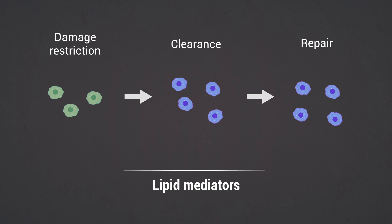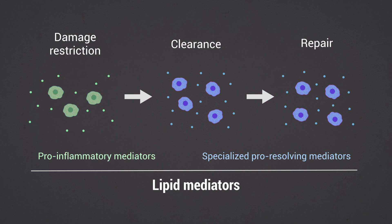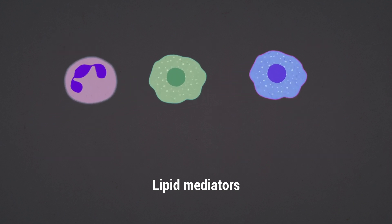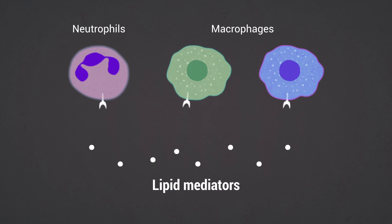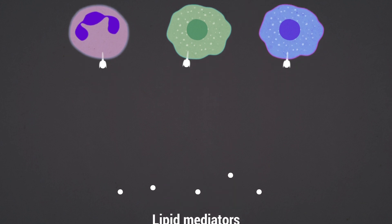Furthermore, lipid mediators play key roles in regulating both the initiation and resolution of acute inflammation. They are rapidly generated by immune cells and have direct receptor-mediated actions on immune cells, including neutrophils and macrophages.